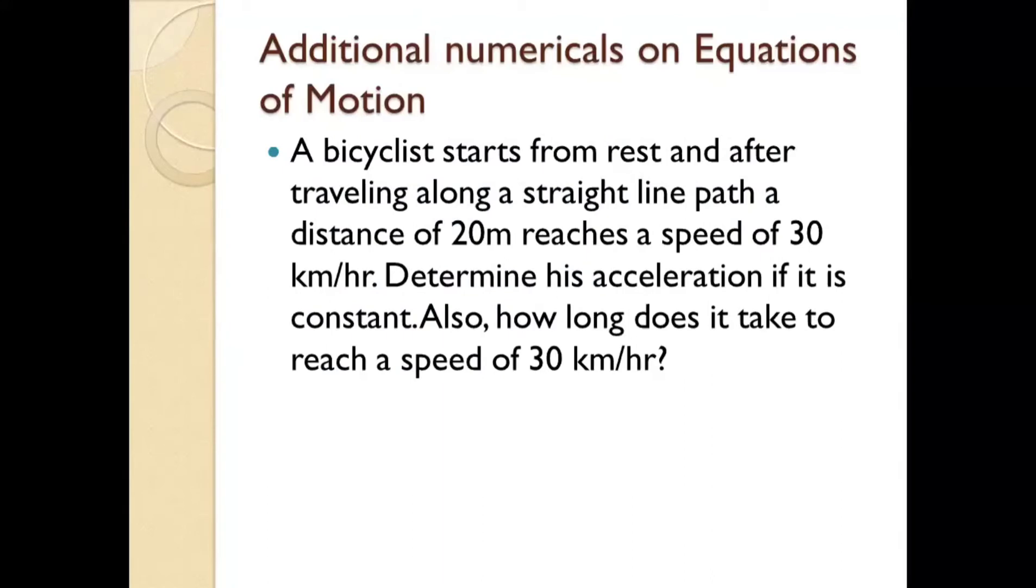So this is the question: a bicyclist starts from rest and after traveling along a straight line path a distance of 20 meter reaches a speed of 30 kilometers per hour.